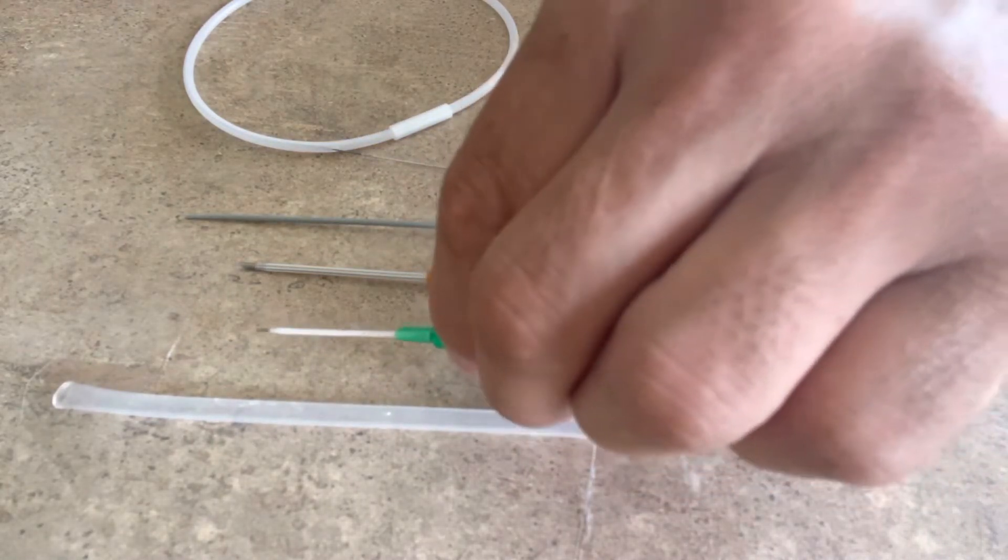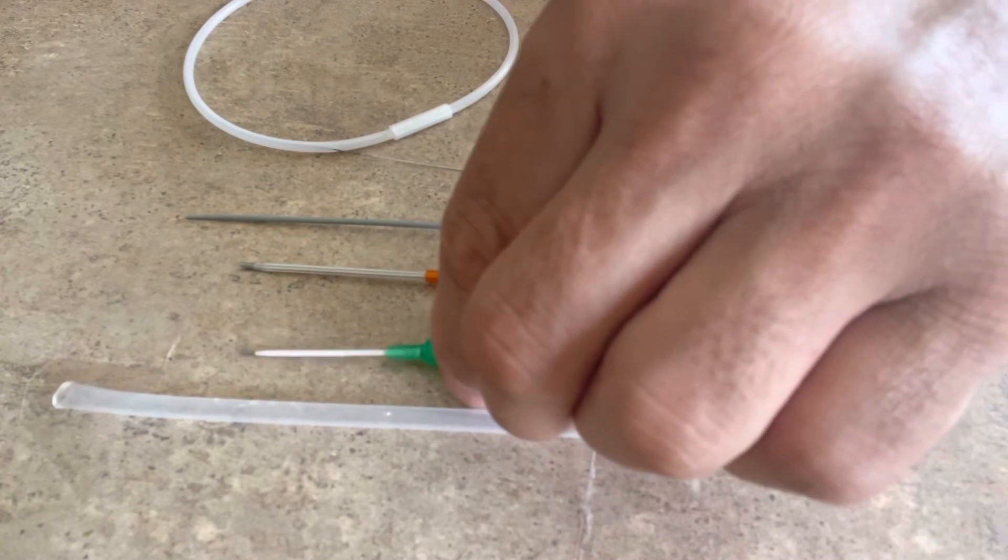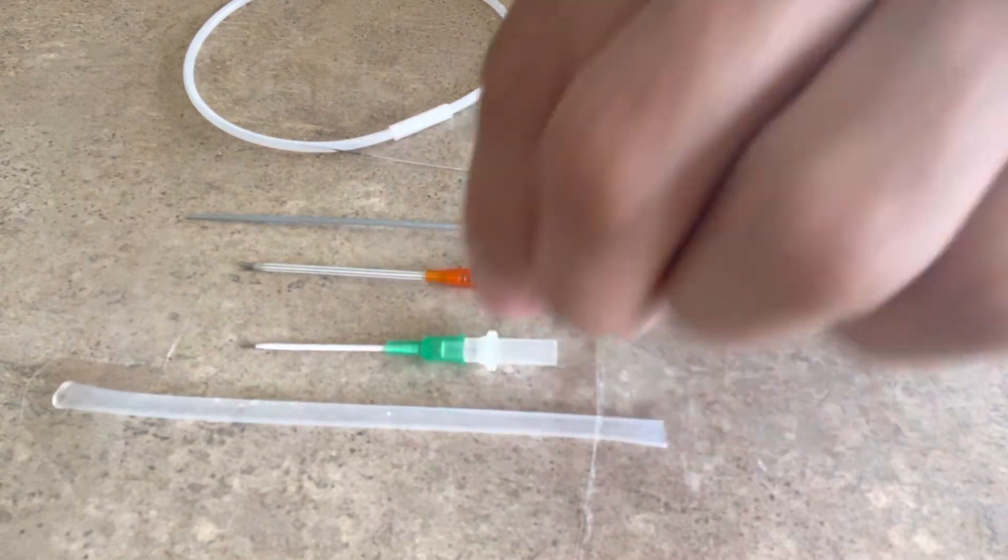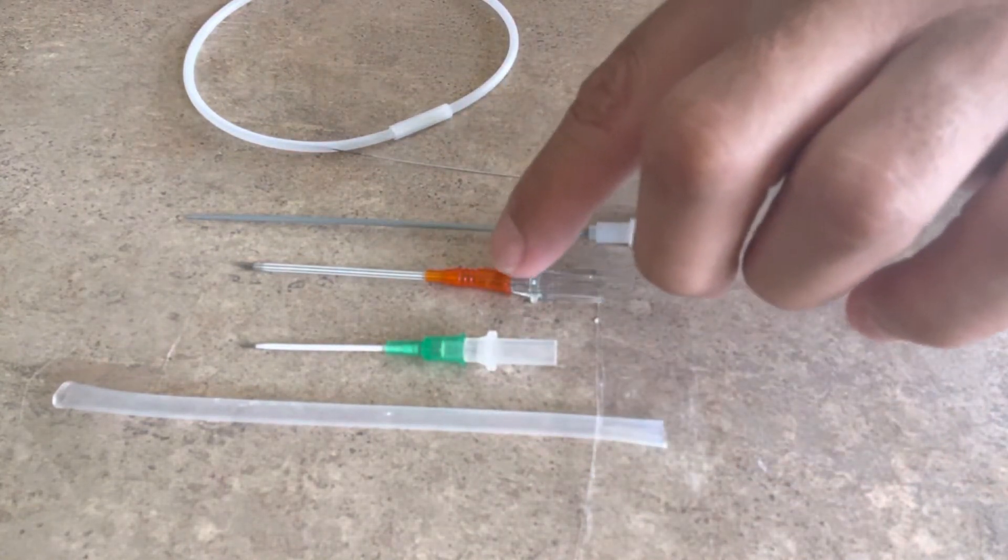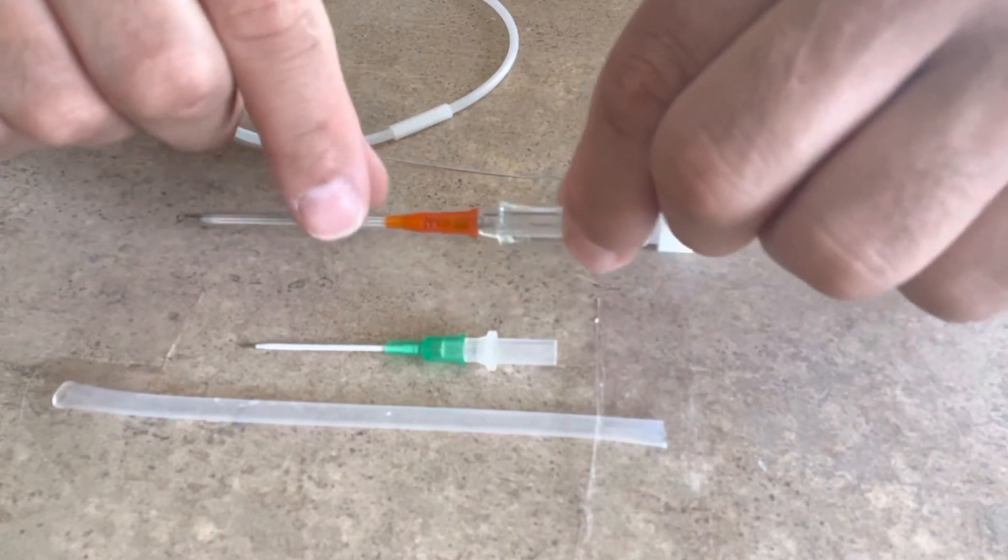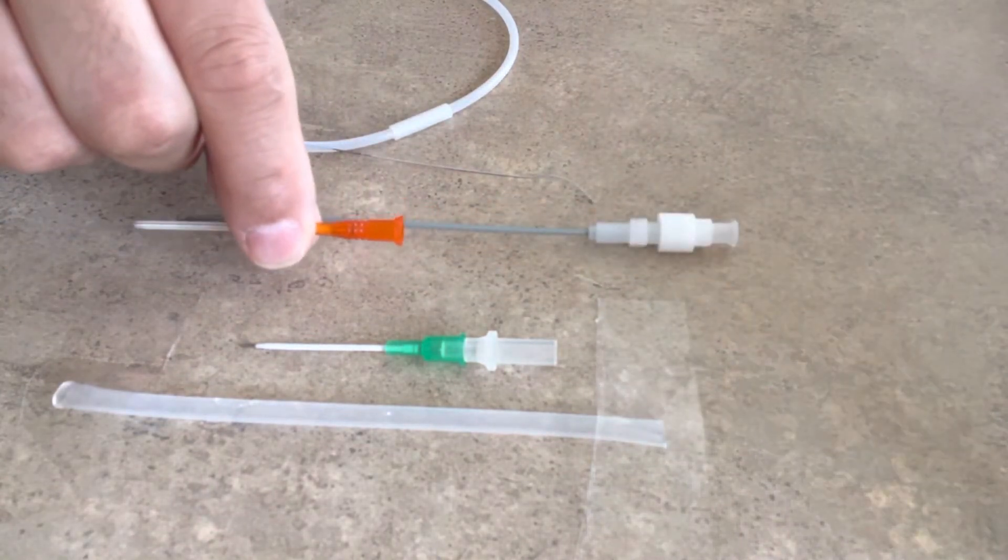And so before I start, things that you want to do is you want to make sure that you load your 14 gauge angiocatheter onto your micropuncture dilator.